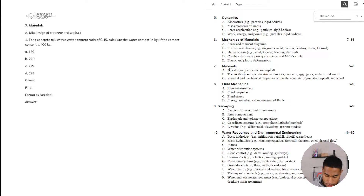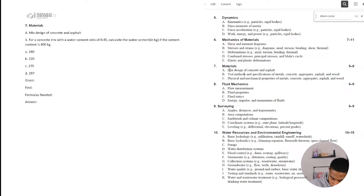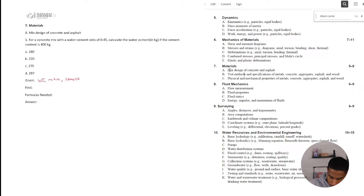So number one says: for a concrete mix with a water-to-cement ratio of 0.45, calculate the water content in kilograms if the cement content is 400 kilograms. So we're given the water-cement ratio and we're also given the cement amount. We're trying to find the water.